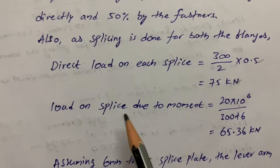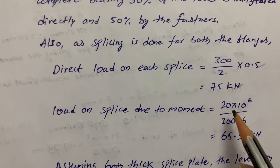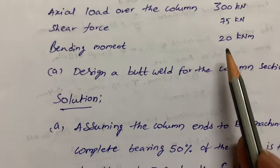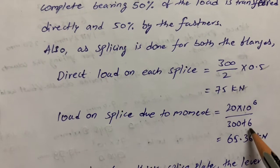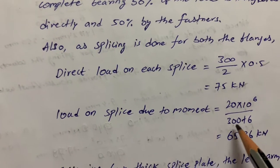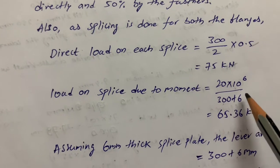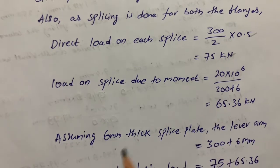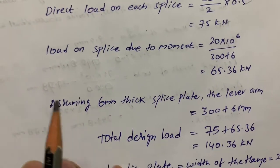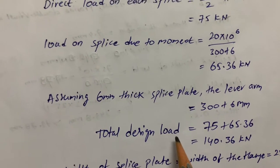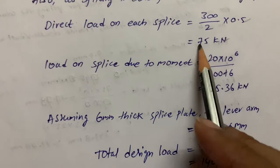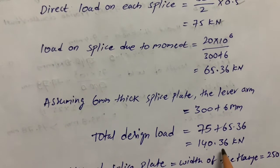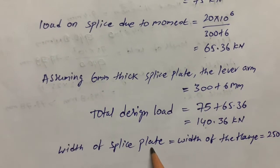The load on splice due to moment is: 20 × 10⁶ divided by (300 + 6), where 300 is the overall depth and 6 is the thickness of the splice plate, giving approximately 65.36 kN. The total design load is therefore 75 + 65.36 = 140.36 kN.